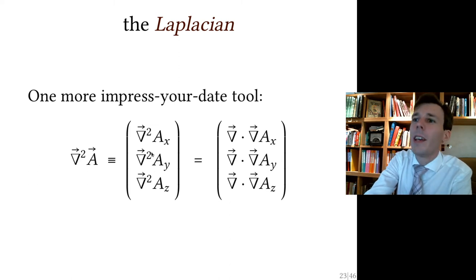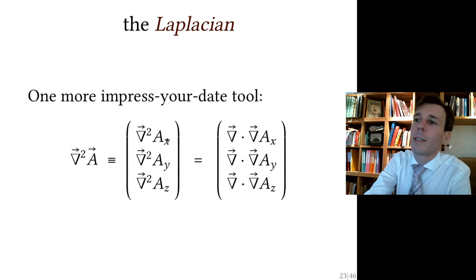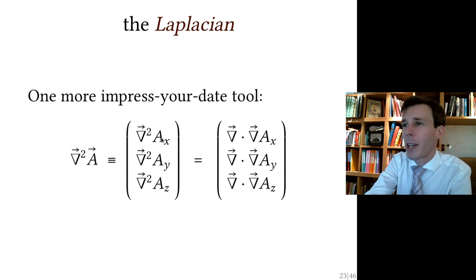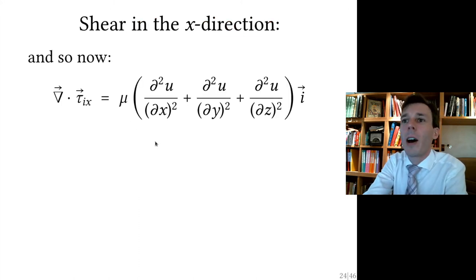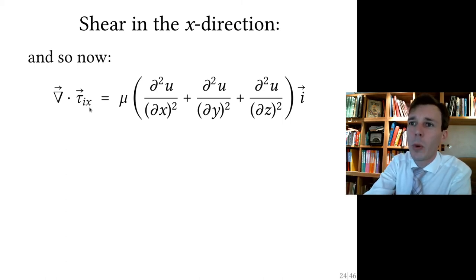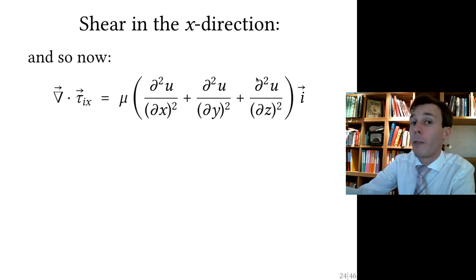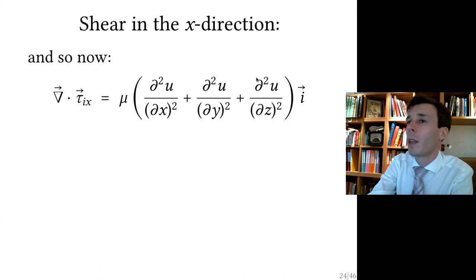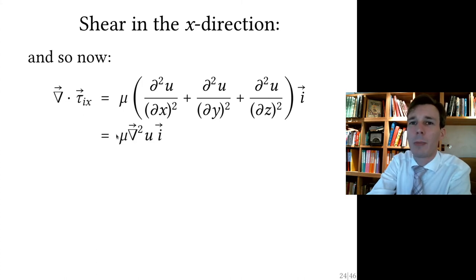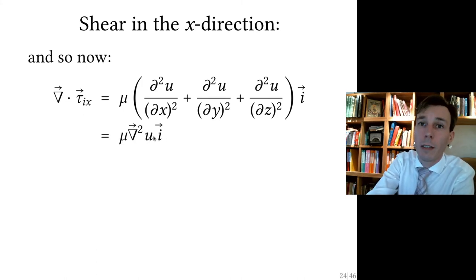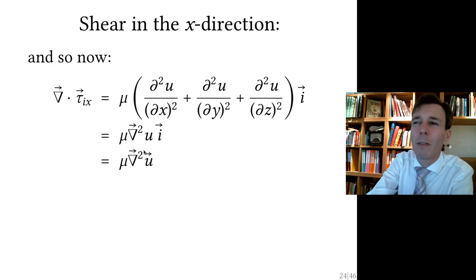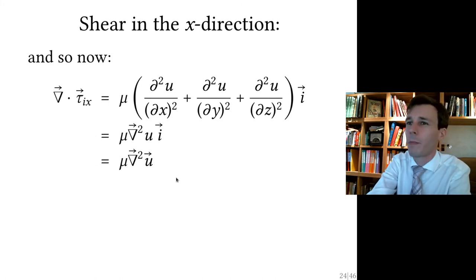Coming back to the shear equation: the shear pointing in X has a magnitude equal to the second derivative of velocity in that direction with respect to space. Instead of writing this out tediously, we can express it compactly as the Laplacian of the X-component of the velocity field.